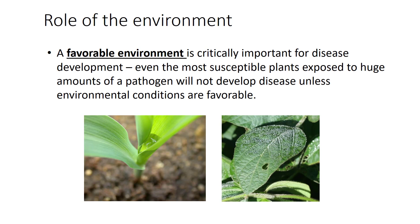Temperature and moisture are the most important environmental factors that affect development of nearly all diseases. Both air or soil temperature and moisture can affect plants and/or the pathogen. If temperature is unsuitable, a plant may grow poorly and therefore become more susceptible to a particular disease. Temperature may also stimulate or reduce the growth of a pathogen, resulting in a different level of disease. Excess or deficient moisture may also stress plants, making them more prone to attack by some pathogens. Additionally, moisture is important for many fungal and bacterial pathogens. Relative humidity, soil pH, soil texture, light, and nutrient status may affect disease development as well.